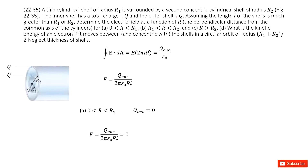We need to determine the electric field as a function of R. First, consider the case where R is smaller than R1. We draw a Gaussian surface inside the inner shell. We apply Gauss's law: the electric field times the Gaussian surface area, which is 2πR times L, equals the enclosed charge divided by epsilon naught. Looking at this Gaussian surface, there is no charge inside, so the enclosed charge is zero. Therefore, the electric field equals zero.